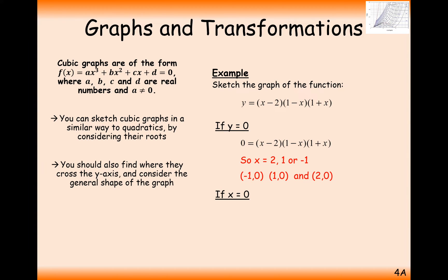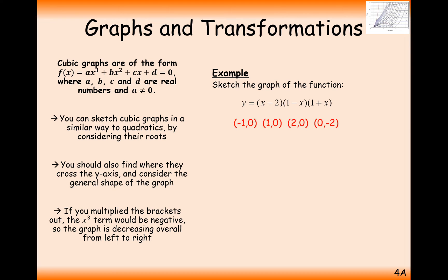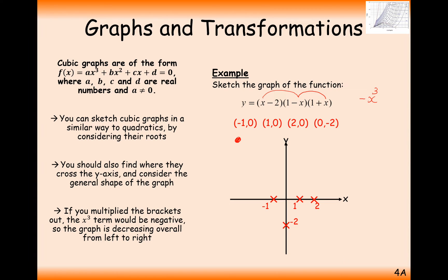We need to consider the y-axis intersection, so setting x equals 0, we get y equals minus 2. On our graph we've got four coordinates: minus 1, 1, 2, and minus 2. Now let's look at the x-cubed term when expanded — we'd get a positive x, a negative x, and a positive x, giving a minus x-cubed term. So this time we start in the top left and finish in the bottom right, coming down through our intersection points.